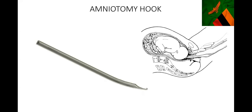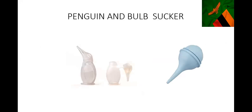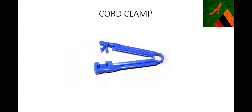Here is an amniotomy hook. In the labor ward we keep using wrong instruments, but this is the correct instrument for artificial rupture of membranes. Sometimes you can use a Kocher's forcep to rupture membranes, but this is the correct instrument when a woman is in labor and you want to do ARM for various indications. We know the penguin sucker and suction bulb, all used for neonatal resuscitation. The cord clamp should be applied three to four centimeters from the point of insertion.